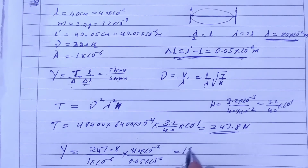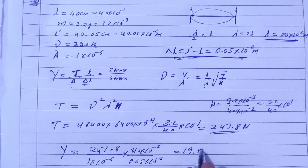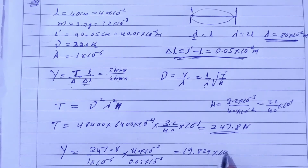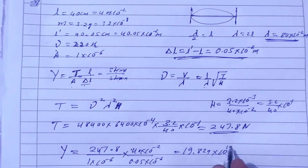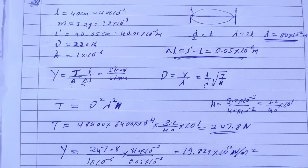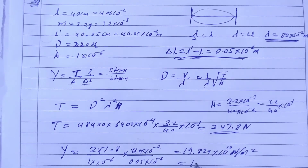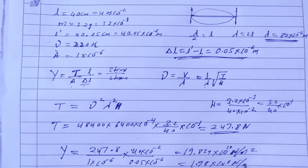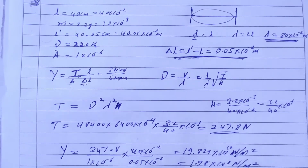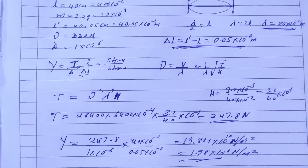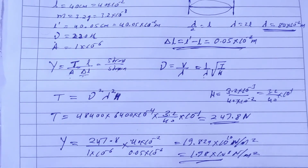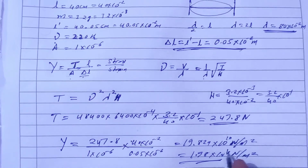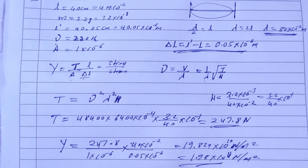Solving this gives 19.824 × 10¹⁰ N/m², which equals 1.98 × 10¹¹ N/m². So the Young's modulus is 1.98 × 10¹¹ Newton per meter square.